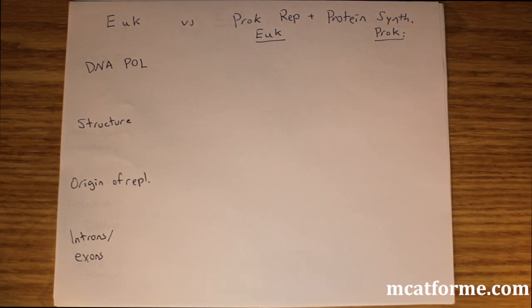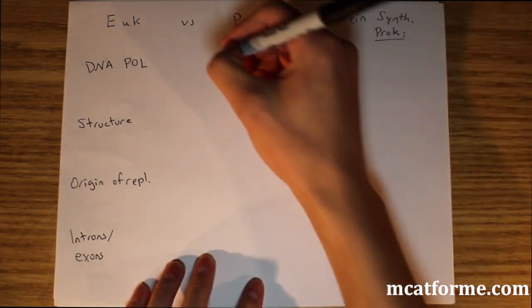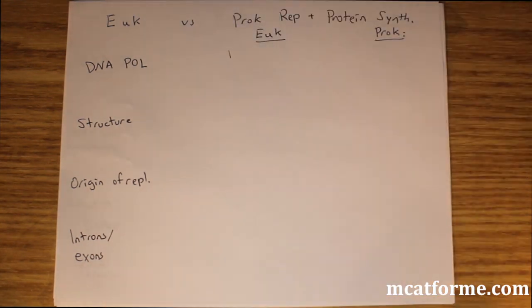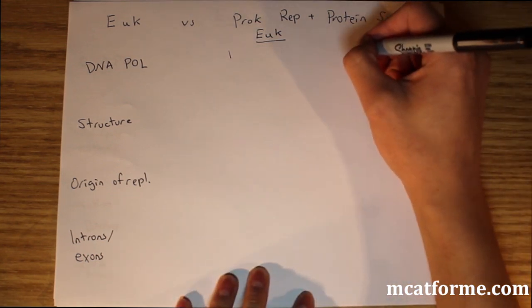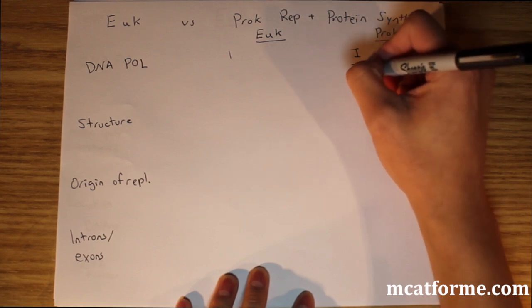The first thing is DNA polymerase. In eukaryotes there's only one and it does everything—it removes primers and lays down the track. But in prokaryotes we have three DNA polymerases, and we'll go through all of them.